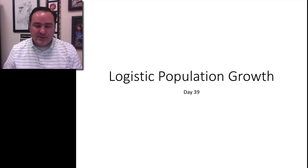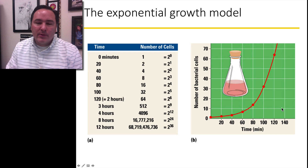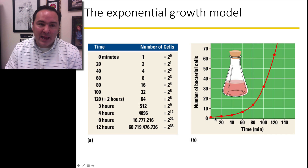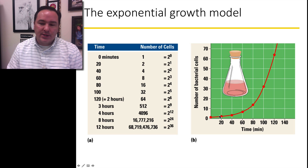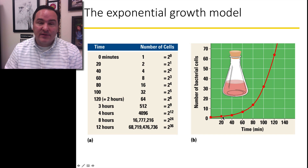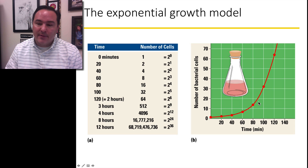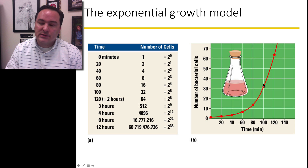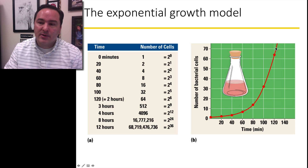Hello again. Today we're going to be talking about logistic population growth. If you recall, we recently just learned about exponential population growth, where we said you can start with just a very few individuals, and if you allow these individuals to reproduce given their rate, you can have this growth pattern that is a J-curve that gets steeper and steeper and steeper.